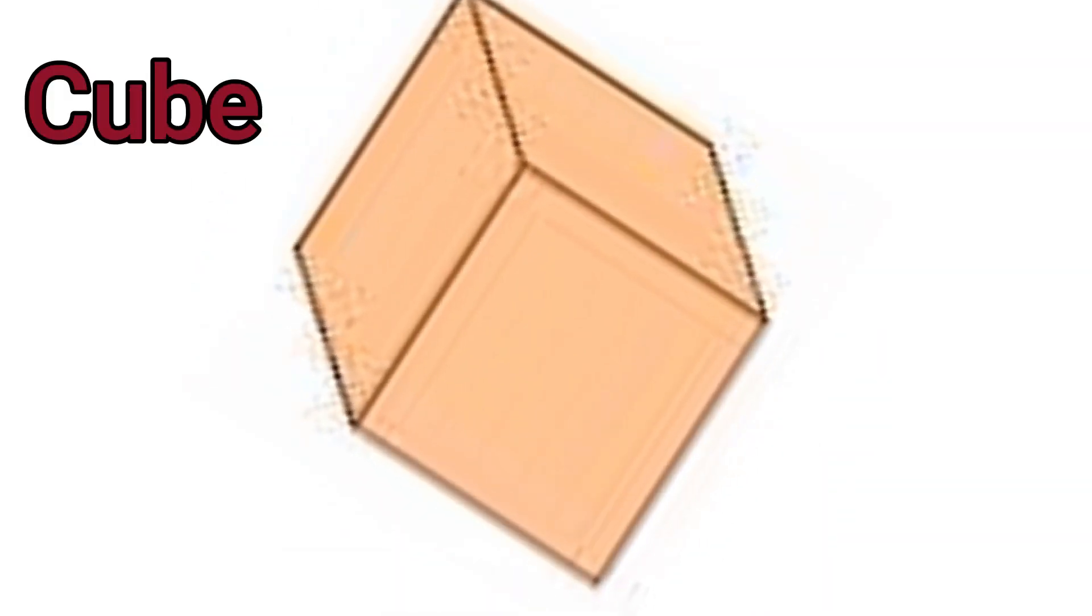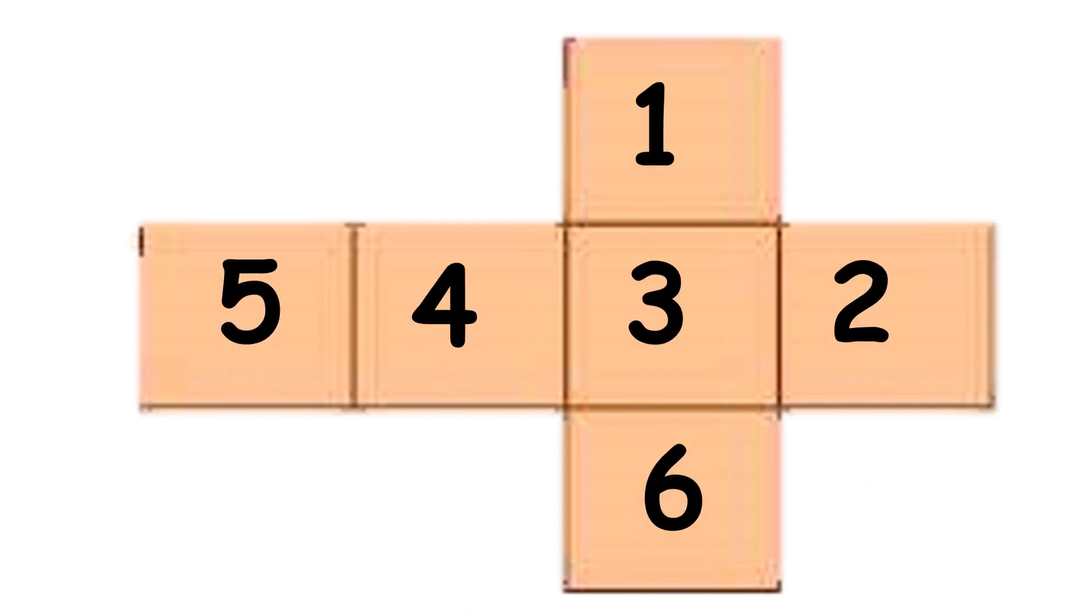What solid figure is this? Yes, you are right. This is a cube. This is what a cube looks like if we open it. It consists of six flat faces. All the faces are squares. This is the net of a cube.